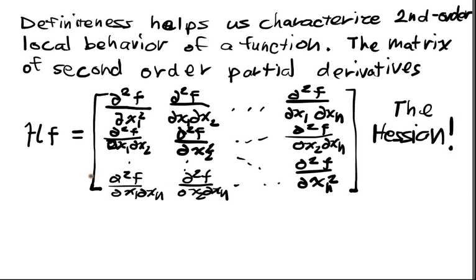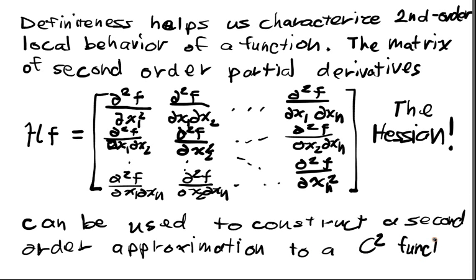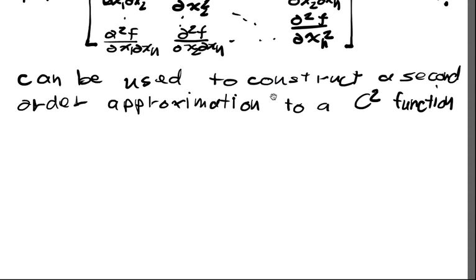This is the Hessian. And this can be used to construct a second order approximation to a C^2 function. C^1 means I have continuous first order partial derivatives. C^2 just means I have that all these partial derivatives are continuous.